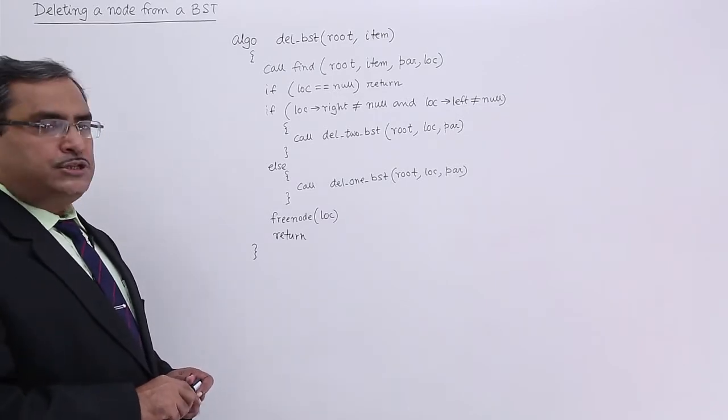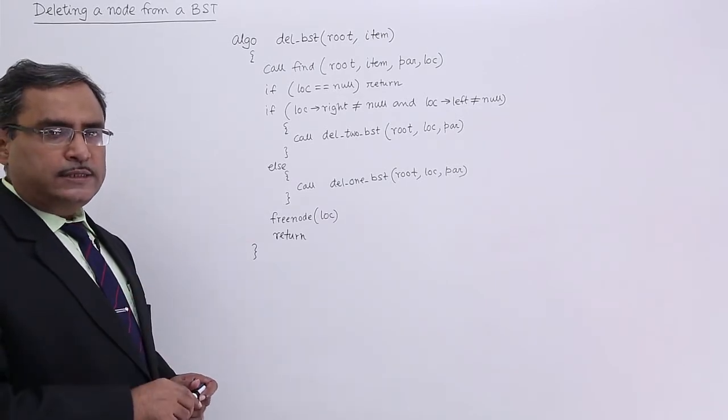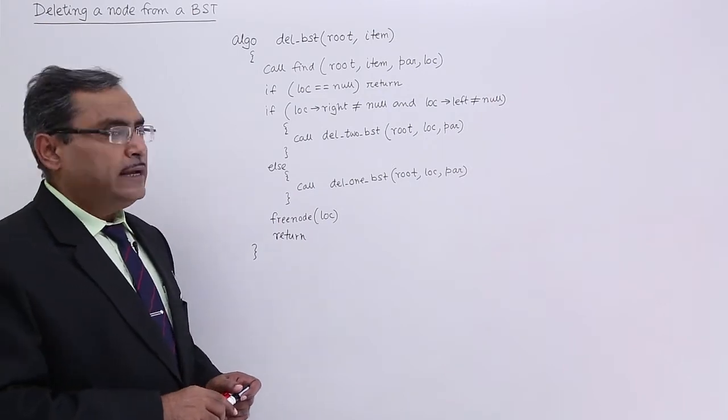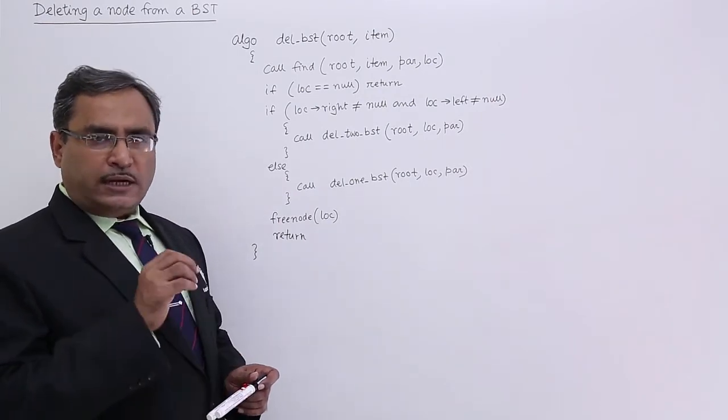Algorithm del BST I am passing 2 arguments one is my root and another one is my item. Item will be the search item here.